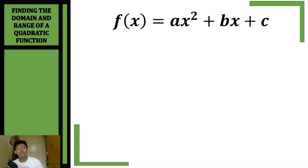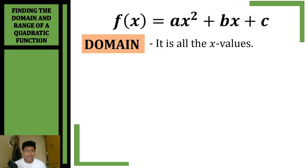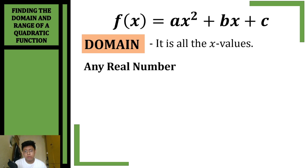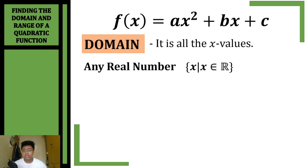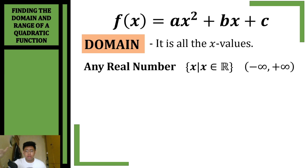Now let's talk about finding the domain and the range of our quadratic function. The domain is all the x values — the possible values we can substitute for x. For a quadratic function, the domain will always be any real number. We can write it as: x such that x is an element of any real number, or in interval form from negative infinity to positive infinity.